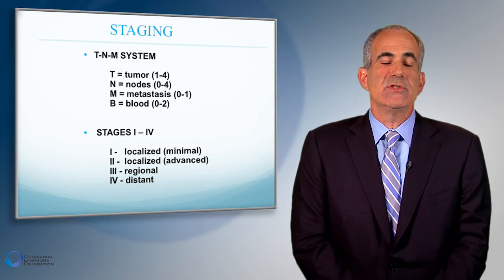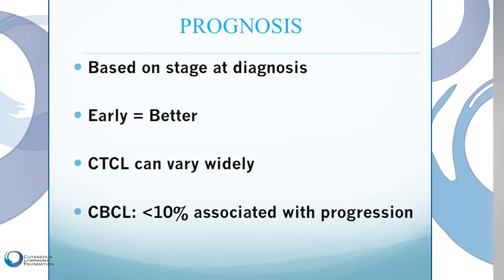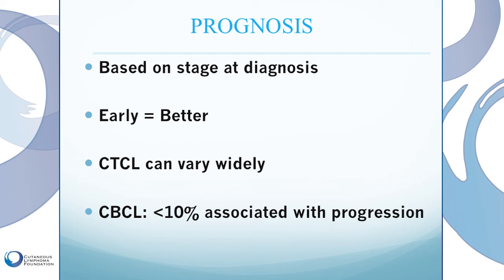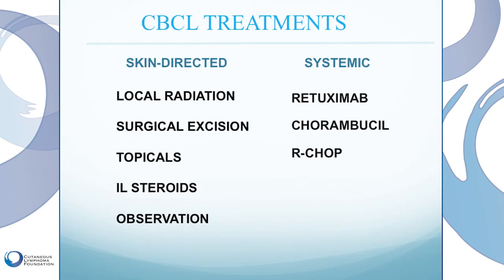From staging, we can generate prognosis and treatment plans. Prognosis of cutaneous lymphoma is better when diagnosed earlier — that's a simple rule of thumb for all cancers. Regarding treatment, this slide shows a list of treatments for cutaneous B cell lymphoma. On the left are skin-directed treatments such as local radiation, excision, topical creams, and intralesional steroid injection. In some cases we just observe, especially when the risks of treatment are greater than the benefits, because many B cell lymphomas can be indolent, slow-growing, and not significantly affect quality of life. On the right are a variety of systemic treatments given orally or intravenously, employed when the appropriate situation calls for them.